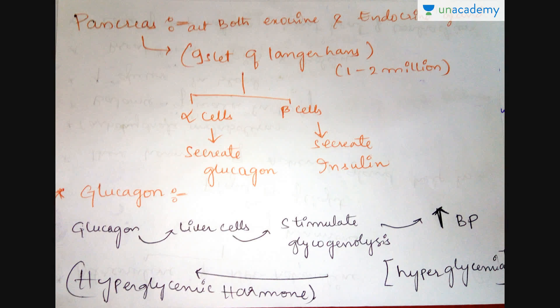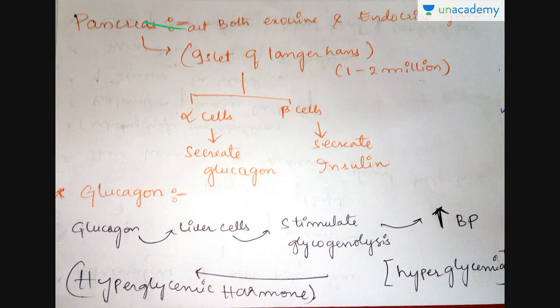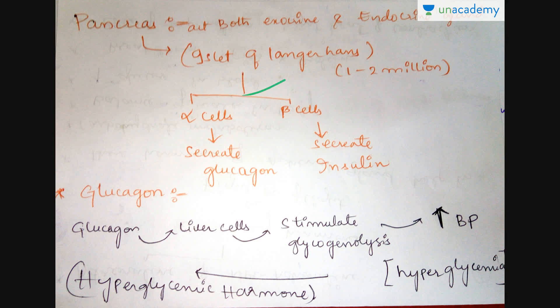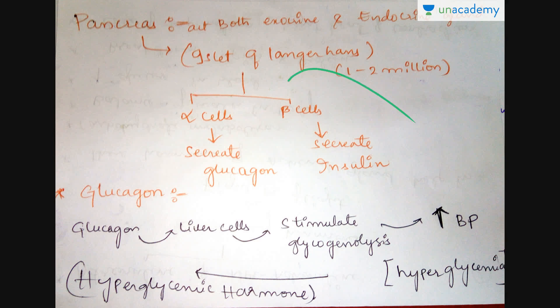Moving on to the pancreas — the pancreas acts as both an exocrine and endocrine gland, hence they are called mixed glands. They have some cells called islets of Langerhans. There are approximately one to two million of these cells. These cells are again of two types: alpha cells and beta cells. Alpha cells secrete glucagon and beta cells secrete insulin.